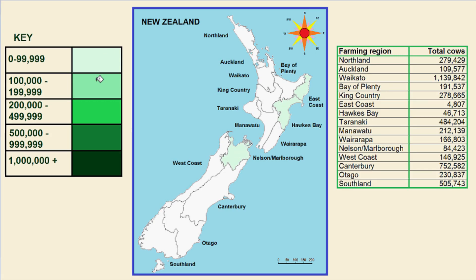Then I will shade in all the regions between 100,000 and 199,999. This includes Auckland, the Bay of Plenty, the Wairarapa, and the West Coast.